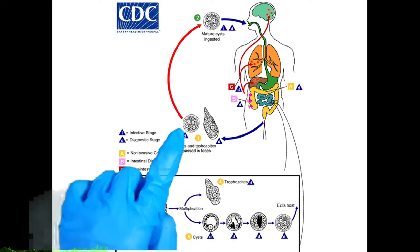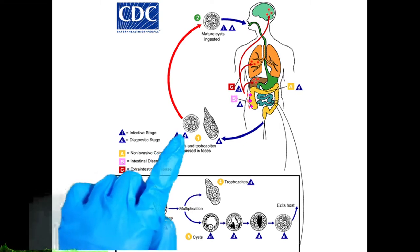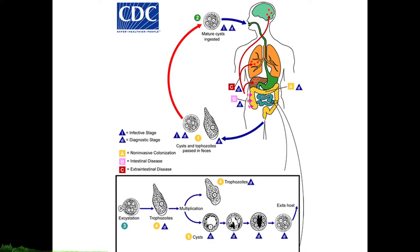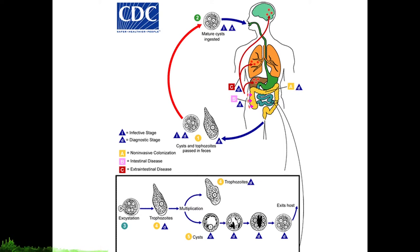Why is the cystic form the infective stage rather than the trophozoite form? Cysts are viable in the environment for weeks to months and can be found in fecally contaminated soil, fertilizer, or water, and on the contaminated hands of food handlers. Trophozoites, on the other hand, are rapidly destroyed once outside the body — if ingested, they would not survive exposure to the gastric environment of the stomach.